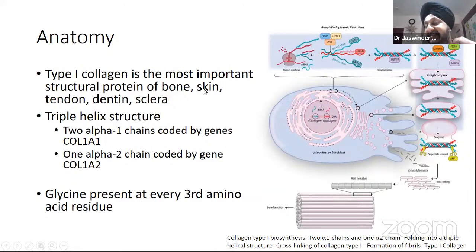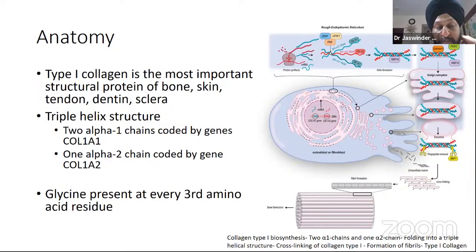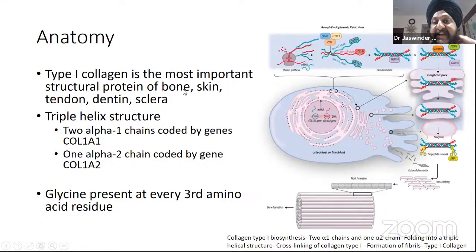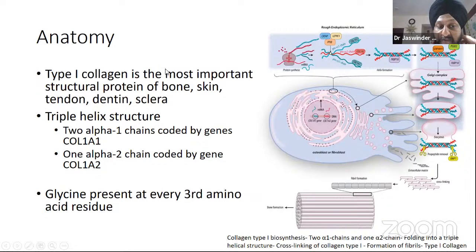Before we discuss the disease, let us go to the anatomical level and try to understand the pathogenesis. Type 1 collagen is the structure at risk in this disease and is the most important component of bones, skin, tendons, dentin, and sclera — which is why these are the structures involved. Type 1 collagen consists of a triple helix structure.